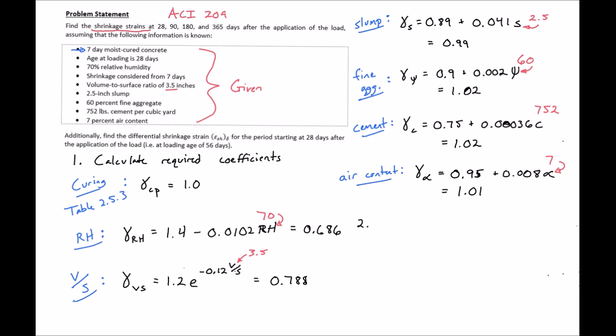our second step is we want to use our coefficients to calculate our ultimate shrinkage. We'll use our expression for ultimate shrinkage: epsilon sub SH ultimate U is equal to 780 times all of our shrinkage factors times 10 to the negative 6.